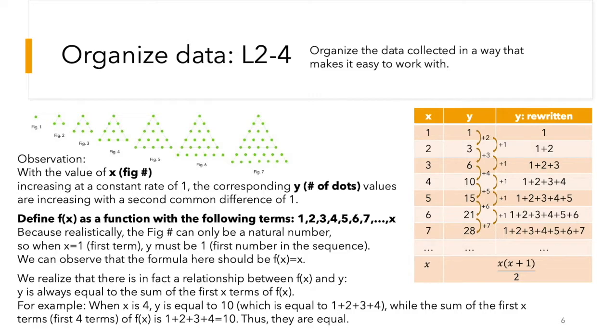To make that clear, I've rewritten y in a way that can make you possibly think on the way that I'm thinking, because what I would do with this type of problem is I would define a function called f(x) with the following terms: 1, 2, 3, and so on, all the way to x. So essentially, when x is 7, y is 1 plus 2 plus 3 plus 4 plus 5 plus 6 plus 7. By defining f(x), we've made something easier, and there is, in fact, a relationship between f(x) and y, which is that y is always equal to the sum of the first x terms of f(x).